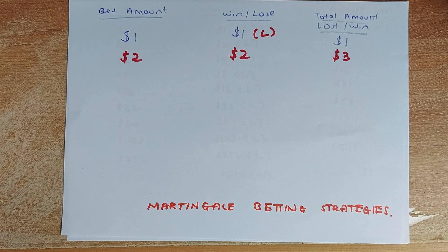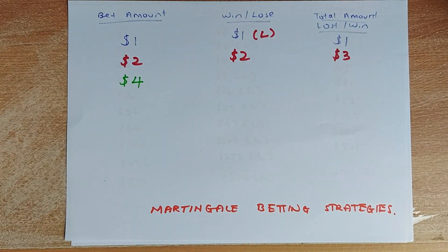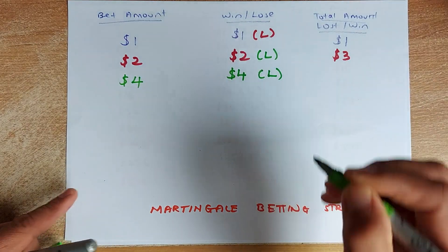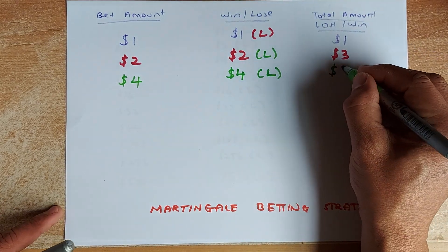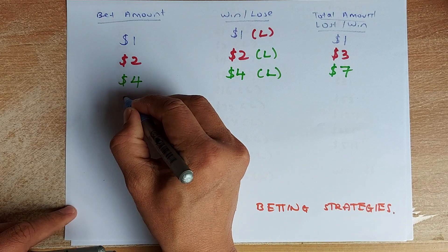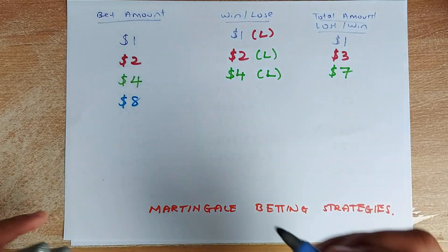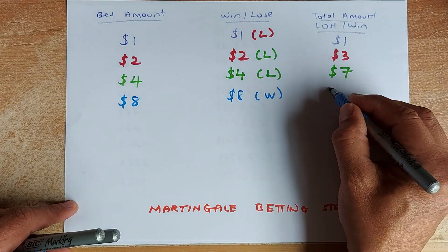Once you've lost twice in a row, you bet again by doubling up — double of two is four dollars. If you lose, you lose four dollars, so the total amount lost after three losses is three plus four, which is seven dollars. Now if you play a fourth time you double up again to eight dollars. One doubles to two, two doubles to four, four doubles to eight. Suppose this time you win eight dollars — you had lost seven dollars and you win eight dollars, so you net one dollar profit.